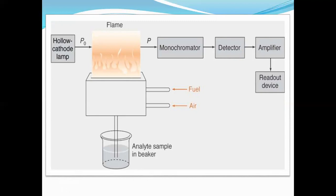Some instruments consist of a chopper. The next component is the monochromator, which is used for the separation or filtration of polychromatic light — it converts polychromatic light into useful monochromatic light. Then there is a detector which detects the absorption of light, followed by an amplifier and readout device.